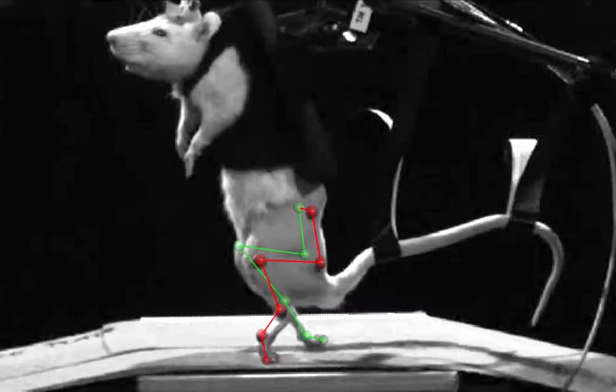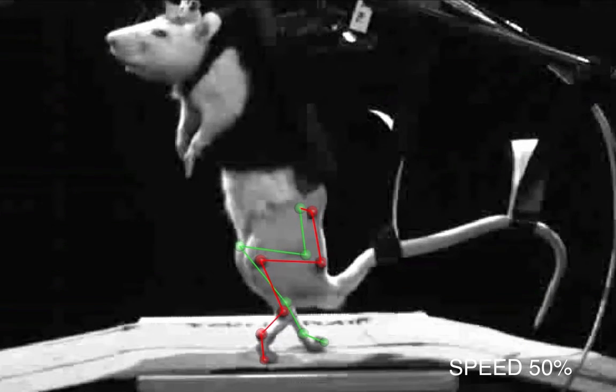Rats were maintained bipedally in a robotic body weight support system over a moving treadmill belt.